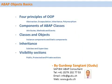Let's summarize what we have seen so far. We have seen the four basic principles of object-oriented programming. We have seen the components of an ABAP class — these are attributes, methods, and events. We have seen classes and objects, and how we can create several objects from a class. We have seen inheritance and how we can derive one class from another. We have seen the visibility sections — public, protected, and private — in an ABAP class. With this we conclude the session on ABAP objects basics. Thank you very much.